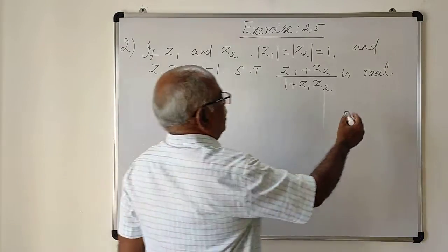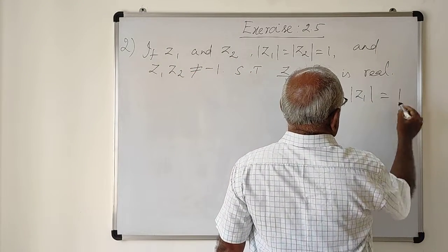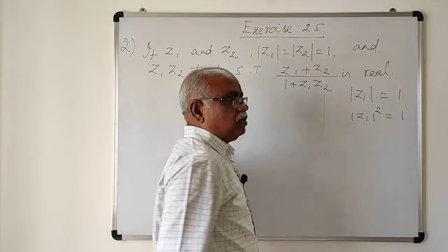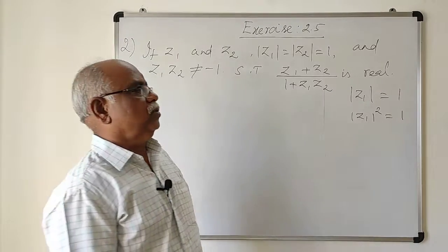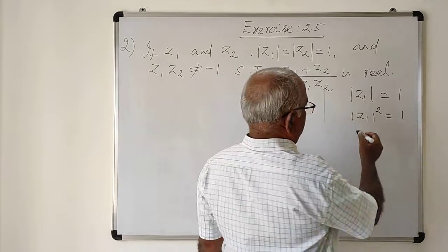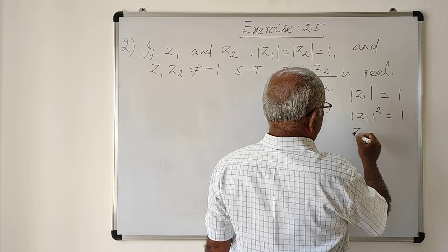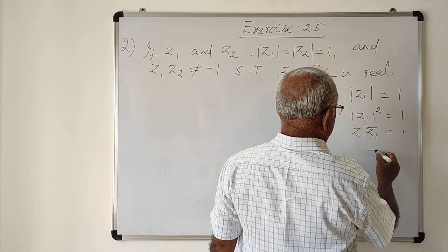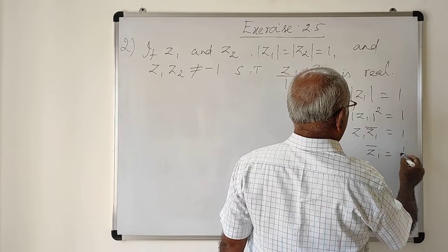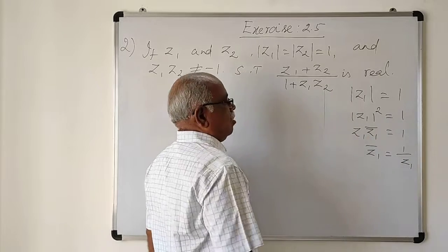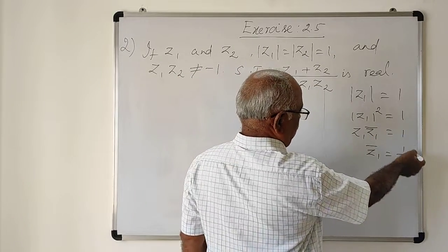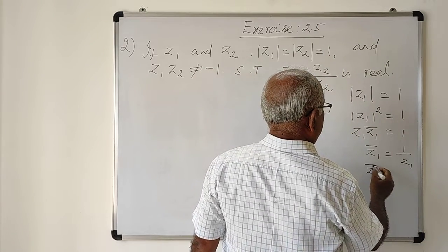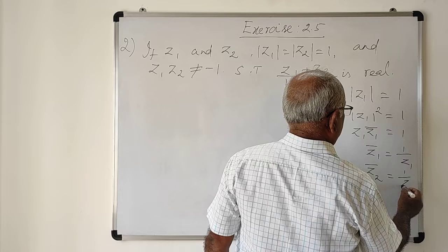Mod of Z1 is given as 1. On squaring both sides, mod of Z1 squared is also 1. By the property of mod of Z, we get Z1 bar equal to 1 by Z1. Similarly, from mod of Z2 equal to 1, we get Z2 bar equal to 1 by Z2.